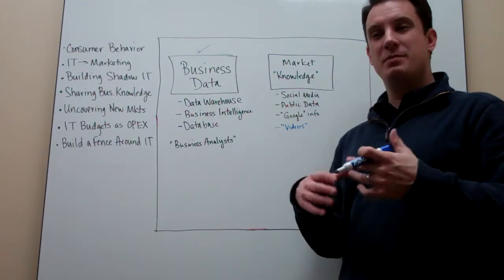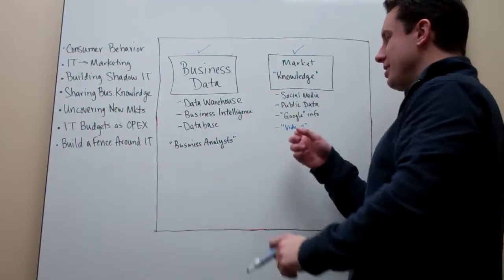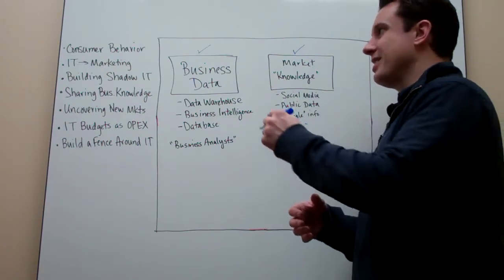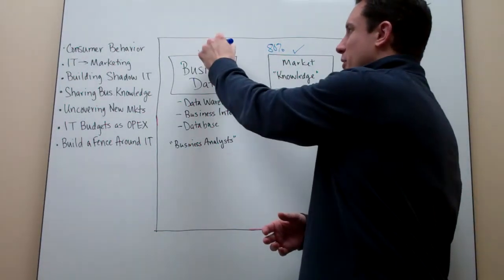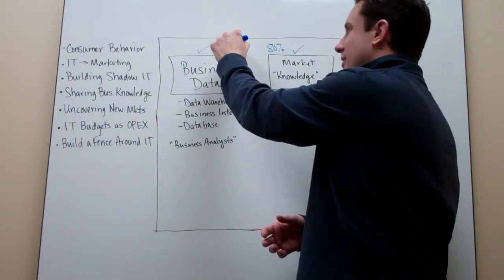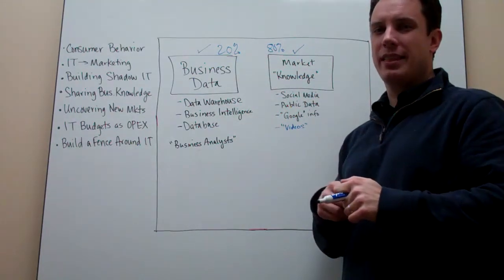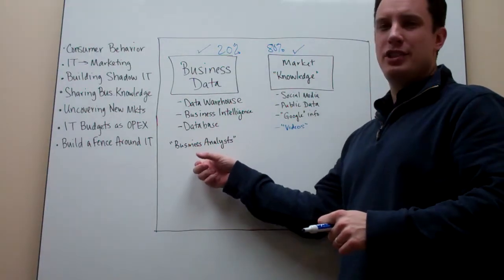But also, more and more, there's tremendous amounts of information in the marketplace. This tends to be about 80% of all the information that's getting created, and this really may only be about 20% of the data. The challenge is most businesses know how to deal with this information—they've got people, they've got tools.